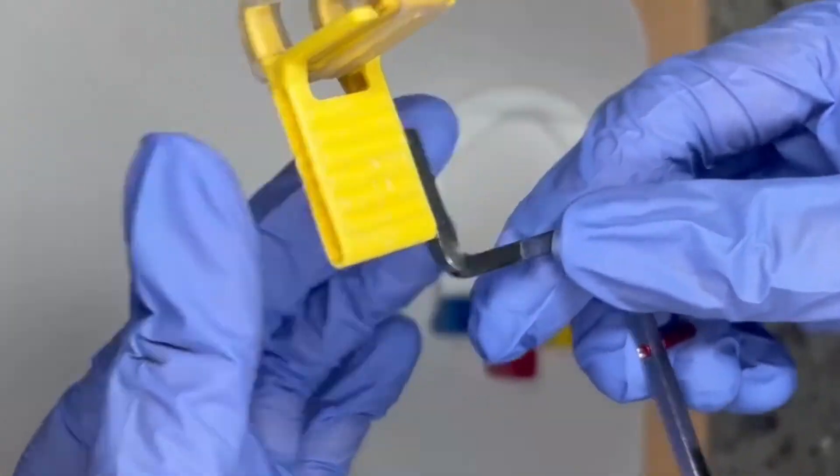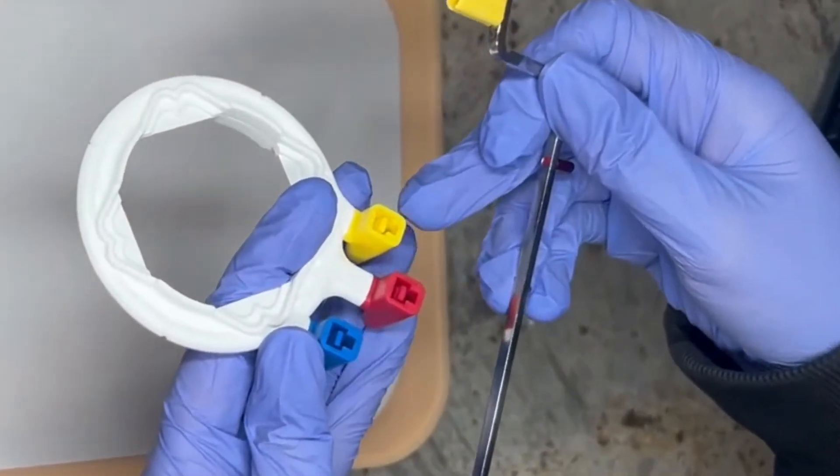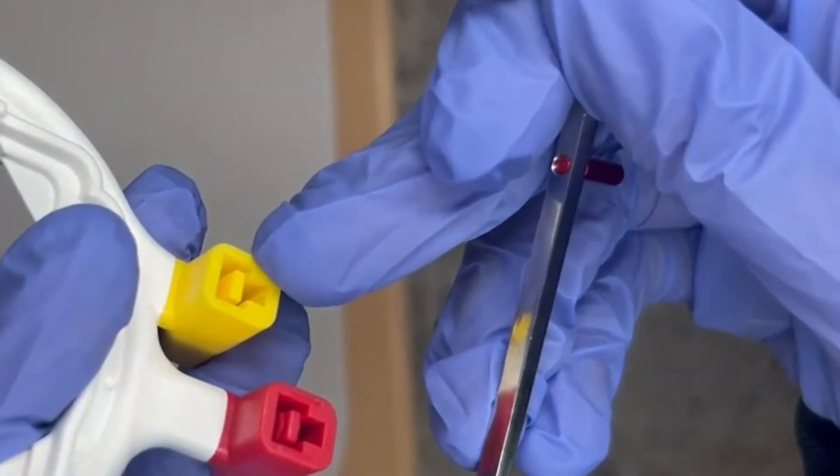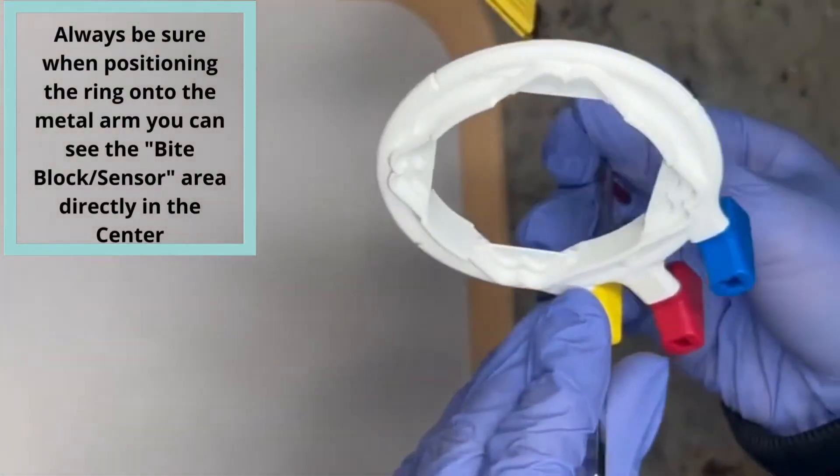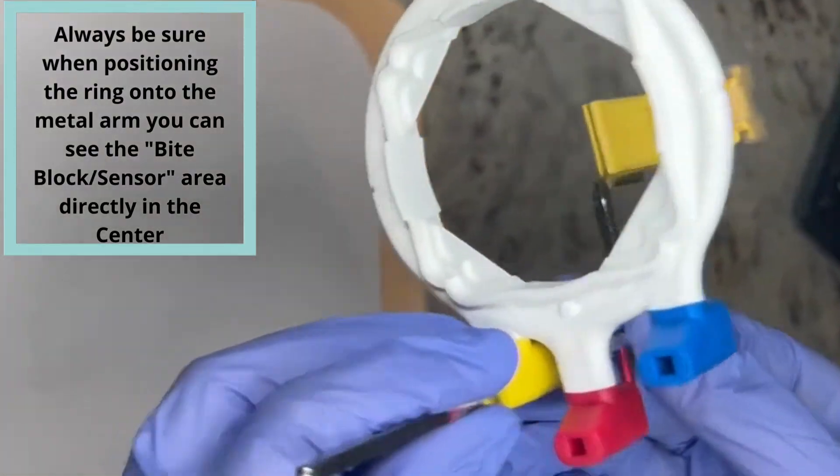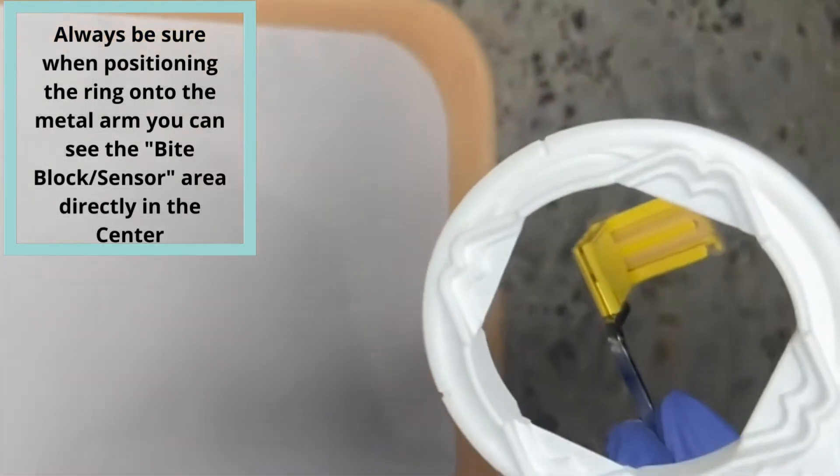Then you're going to take your ring and put it into the yellow part right here. It's just going to go straight in just like that, and as you can see it is perfectly centered to take your posterior shots.